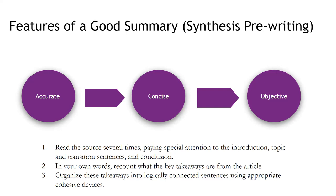By accurate, I mean it represents the information correctly — you're not adding anything or taking away anything from the original source. Concise means it's short and to the point; no need for long convoluted sentences or filler. Ideally a summary is about four to five sentences, but it can actually be much shorter.